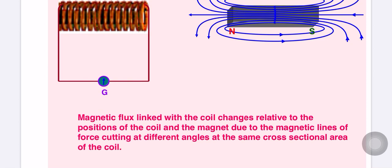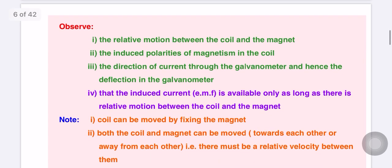The magnetic flux linked with the coil changes relative to the position of the coil and magnet, due to magnetic lines of force cutting at different angles at the same cross-sectional area of the coil. For observations: first, write the construction — bar magnet and a coil connected with galvanometer. Observation one: relative motion between the coil and magnet causes galvanometer deflection, because it induces polarities of magnetism in the coil, changing the direction of current through the galvanometer.